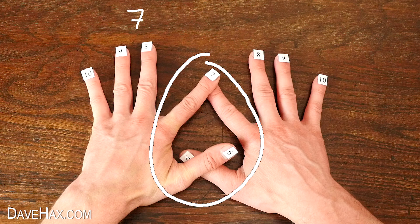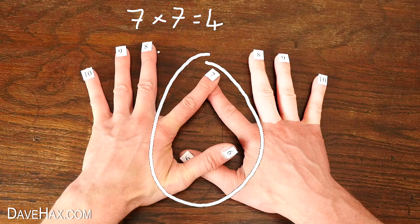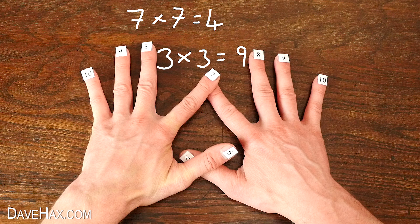To get the answer to 7 times 7, we obtain the first number by seeing how many of our fingers are touching here. The answer is 1, 2, 3, 4. The second number is generated by multiplying the remaining digits on the left hand by those on the right hand. In this case, it's 3 times 3, which is 9. So the answer to 7 times 7 is 49.